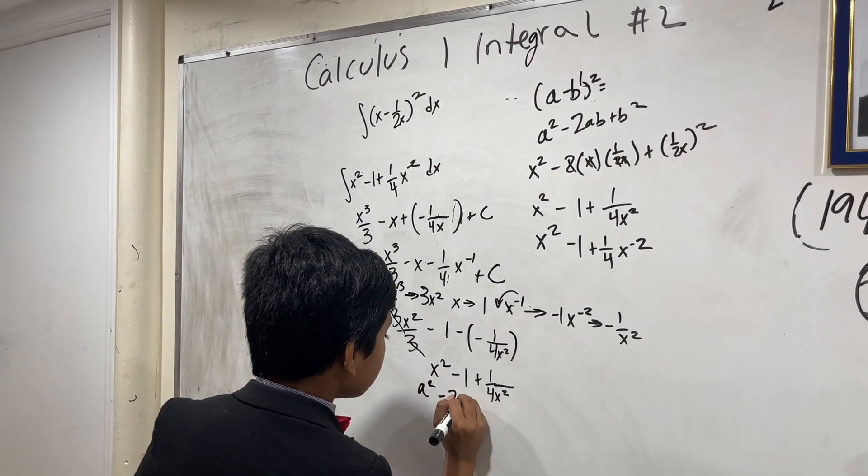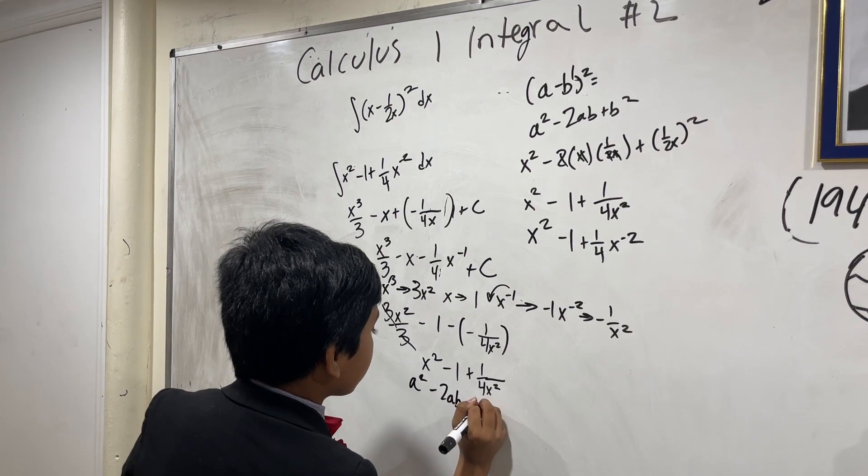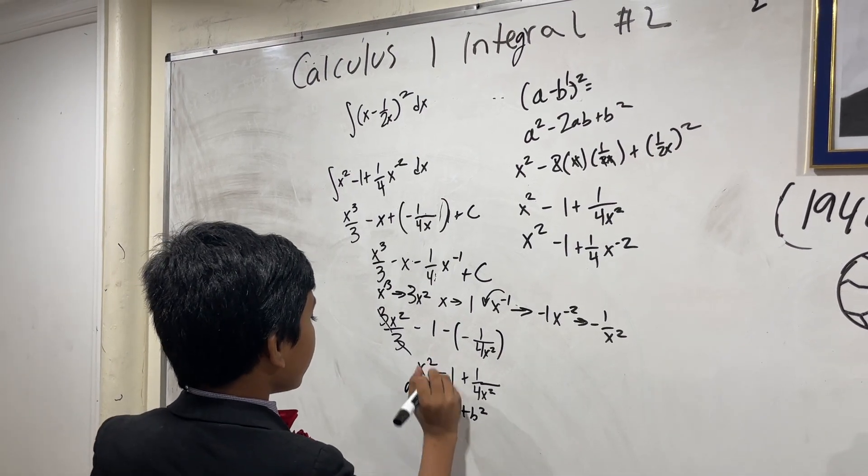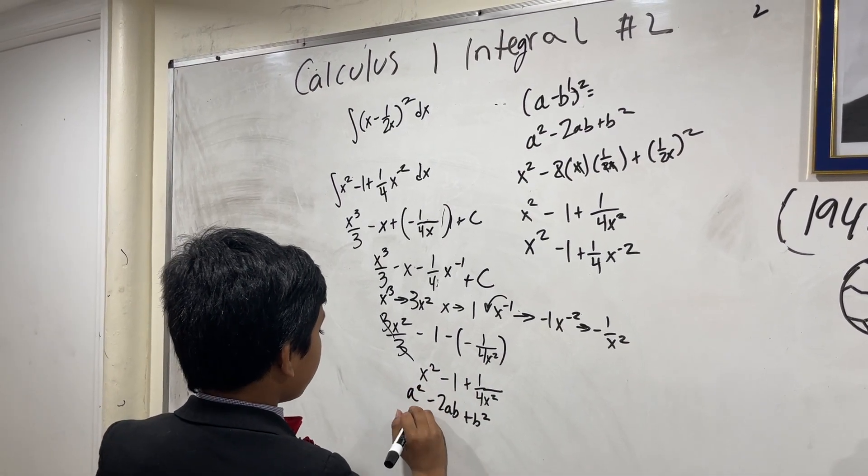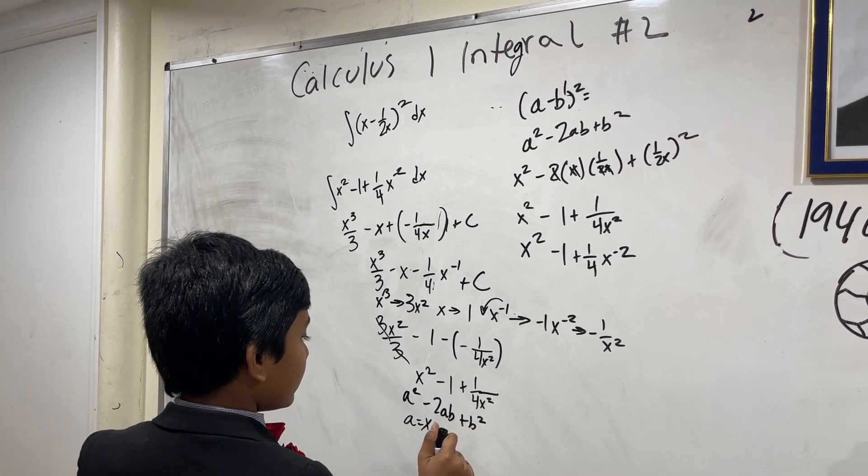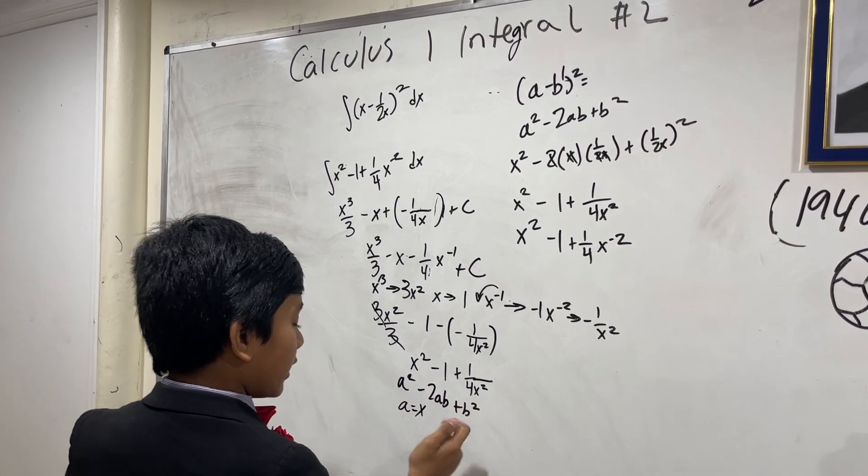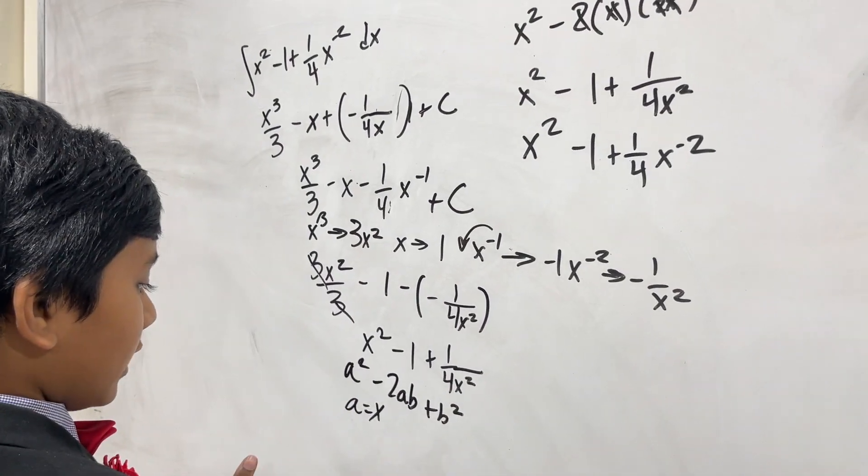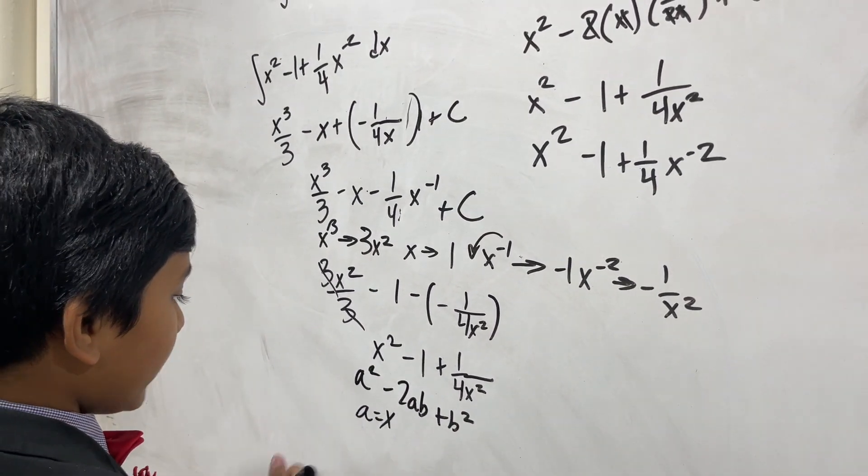a squared minus 2ab plus b squared. Taking the square root of x squared, we know that a is x, and then we know that b squared, taking the square root of 1 over 4x squared, is 1 over 2x.